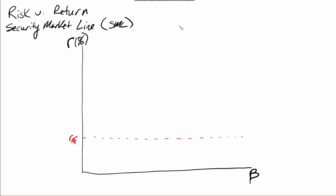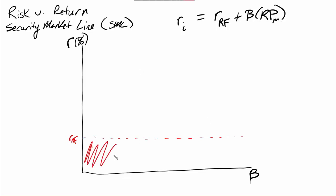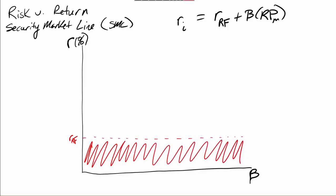Regardless of what beta is, regardless of how risky an individual stock is, the risk-free rate remains constant. We're looking at the return on the risk-free rate plus beta times the market risk premium. The intercept here is our risk-free rate — that's the entire area at the bottom — and then we're going to have an upward sloping line, and we'll put a couple of points on it.